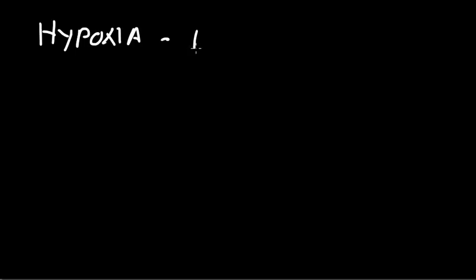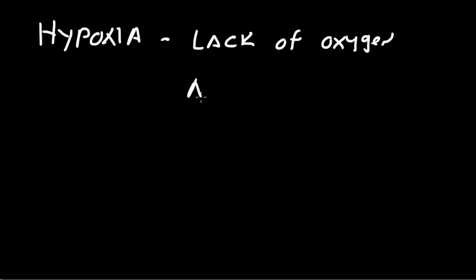Today I want to talk about hypoxia — the four different types of hypoxia, as well as what it is in general and how it occurs. Hypoxia is a lack of oxygen available in the brain.